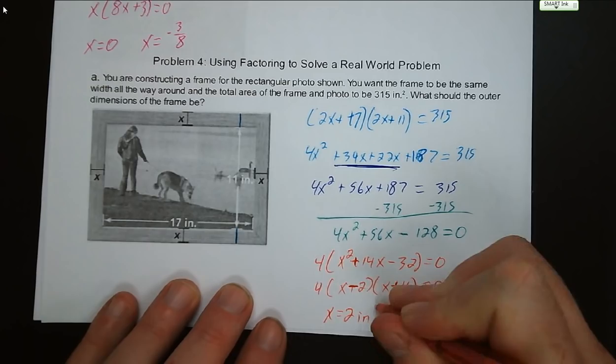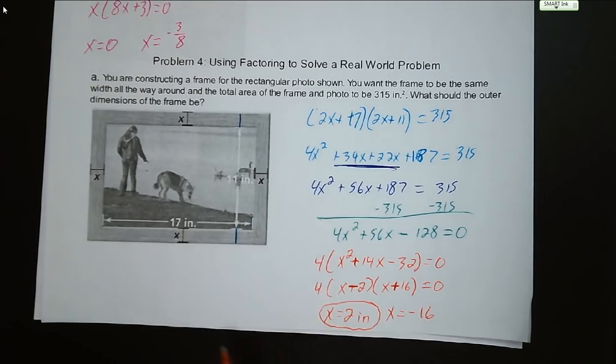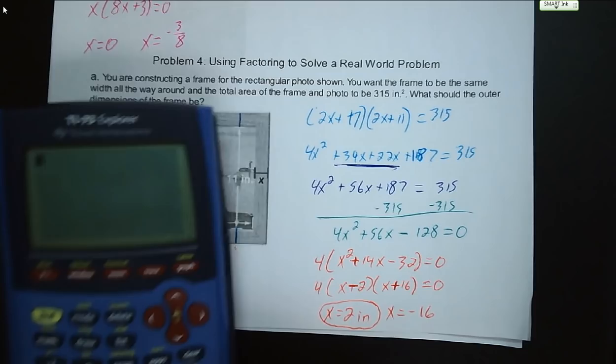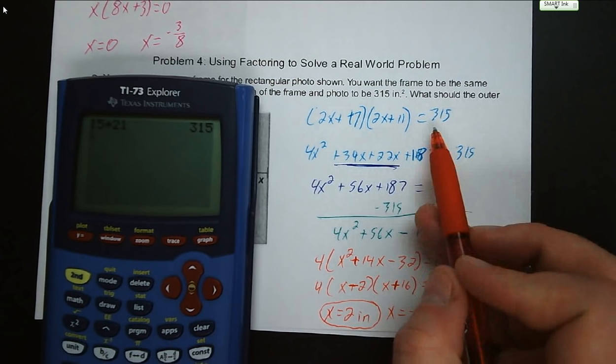We can double-check: the picture is 11 by 17, plus 2 inches on either side gives dimensions 15 by 21. And 15 times 21 equals 315 square inches, which matches what we started with. So we can always check our work.